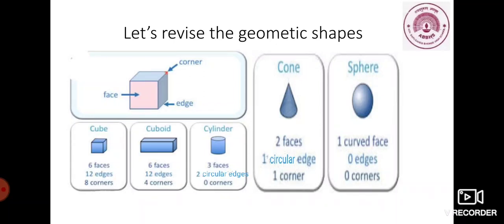Like, cube has 6 faces, 12 edges and 8 corners. A cuboid has 6 faces, 12 edges and 4 corners. A cylinder has 3 faces, 2 circular edges and 0 corners. A cone has 2 faces, 1 circular edge and 1 corner. A sphere has 1 curved face, 0 edge and 0 corner. I hope you all have understood this concept of geometric shape with this video.